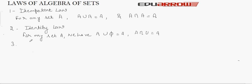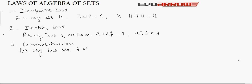The third law is the Commutative law. This law says that for any two sets A and B, we have A union B is equal to B union A, and A intersection B is equal to B intersection A.